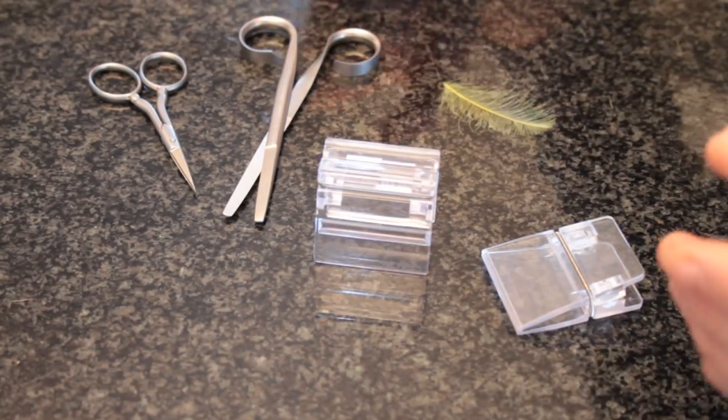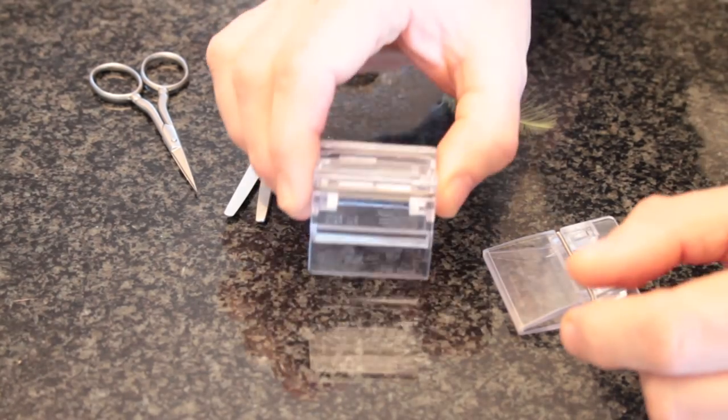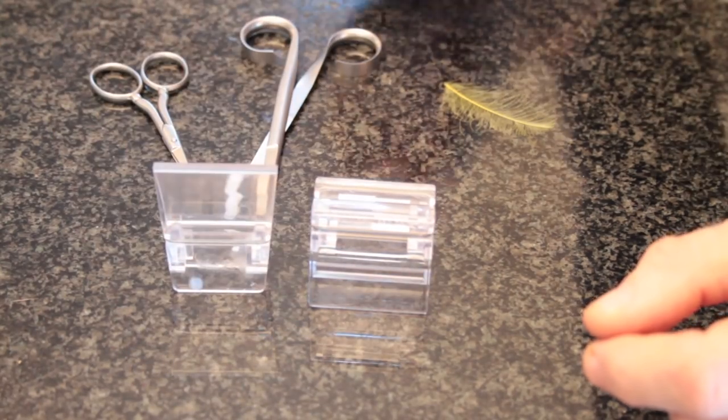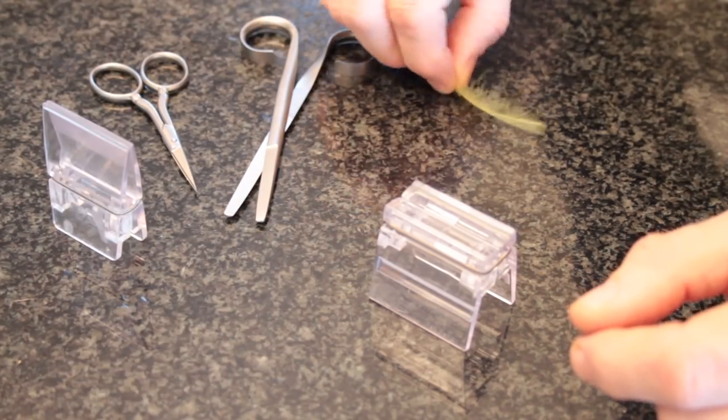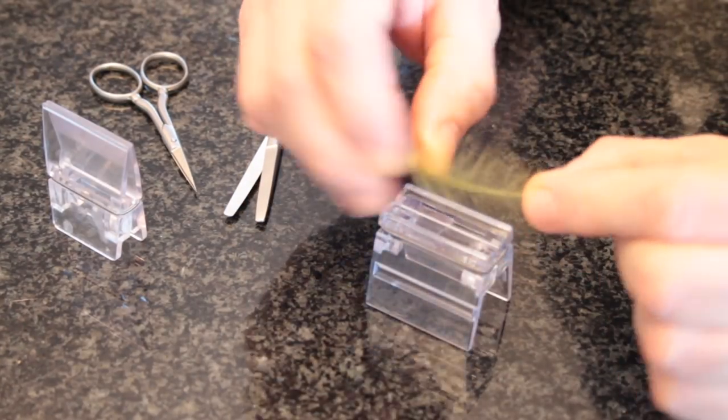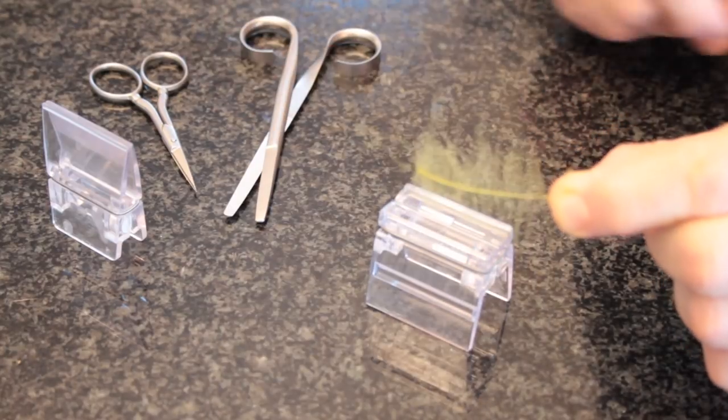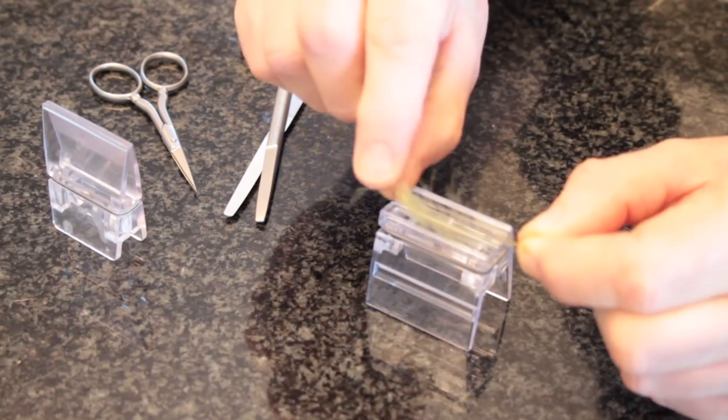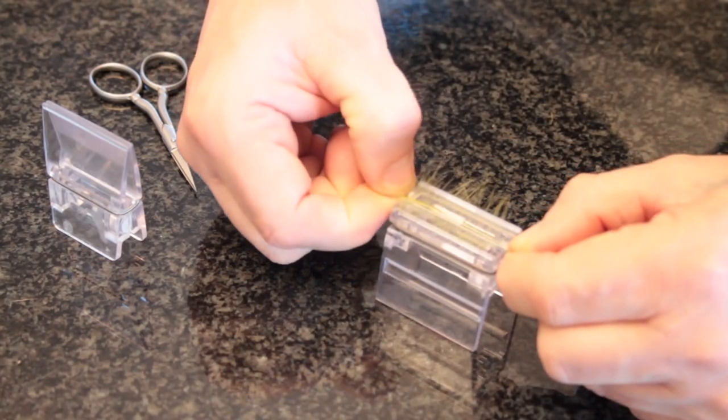Okay, this is a little magic tool tutorial. The magic tool comes in five different sizes; this is the medium size. What we do is take a CDC hackle, hold it by the tip, pull all the fibers out so they're 90 degrees to the stem, then take this on top like this and push the thick end in first until it clicks.